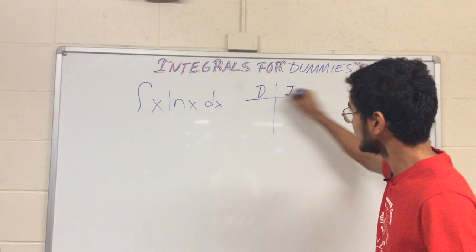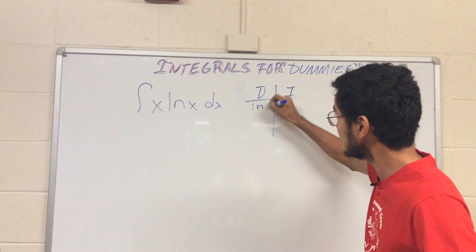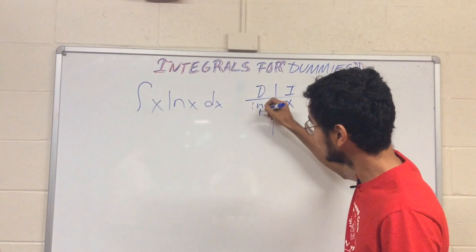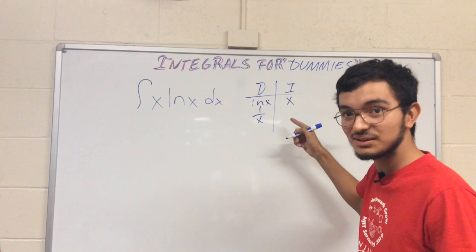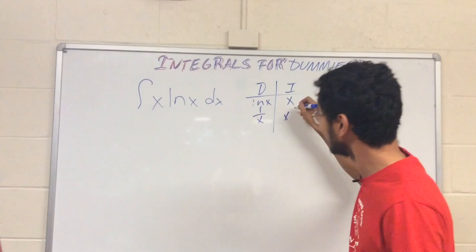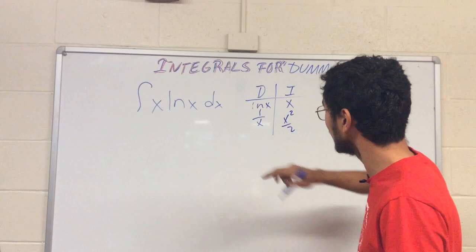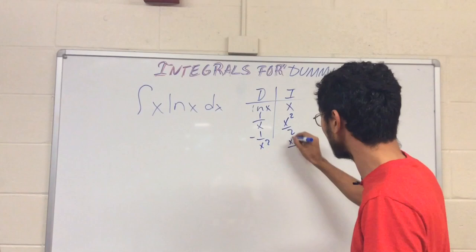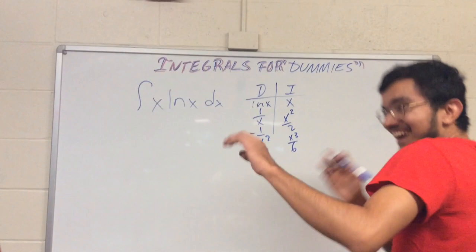Let's do the DI method — differentiate and integrate. We're going to choose u = ln(x) and dv = x dx. Differentiating ln(x) gives us 1/x, and integrating x gives x²/2. Differentiating again gives negative 1/x², and integrating x²/2 gives x³/6. But wait — this is wrong.